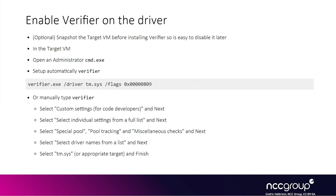To enable Verifier, you can either do it from the command line or using the GUI. Basically, you modify the Verifier configuration and enable certain flags associated with the tm.sys kernel driver to indicate that you want to enable tracking certain pool allocations. Since the kernel pool is the name of the Windows kernel heap, it will allow tracking pool allocations and frees, and it will help detecting when a freed chunk is accessed whereas it should not be the case.